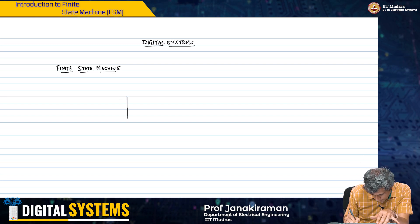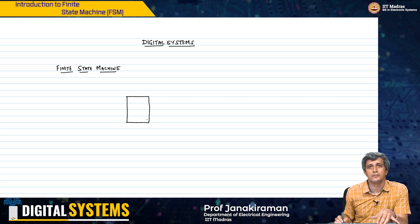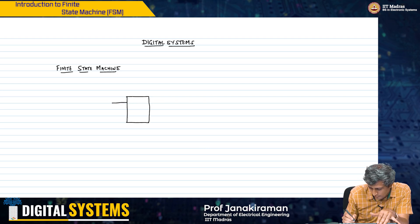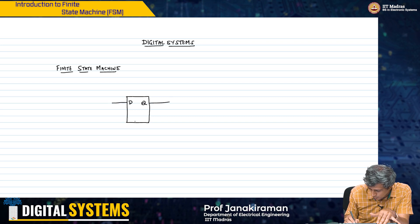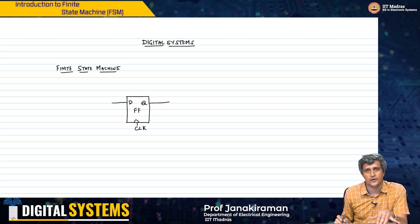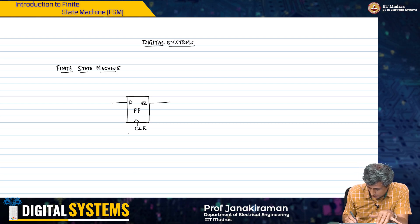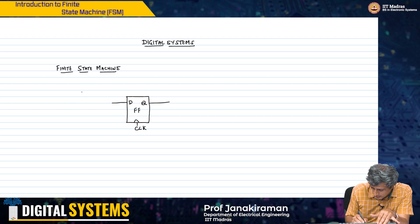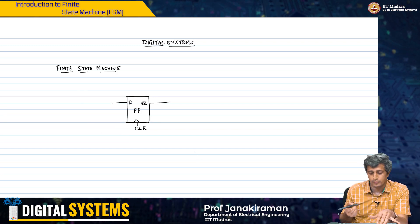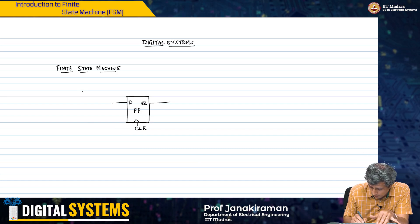The idea is as follows — I had alluded to this in the beginning of this module on sequential circuits. You have D, Q, and a clock. This is a D flip-flop, a positive edge triggered flip-flop, and what I want to do now is to basically control what states this flip-flop will go through.